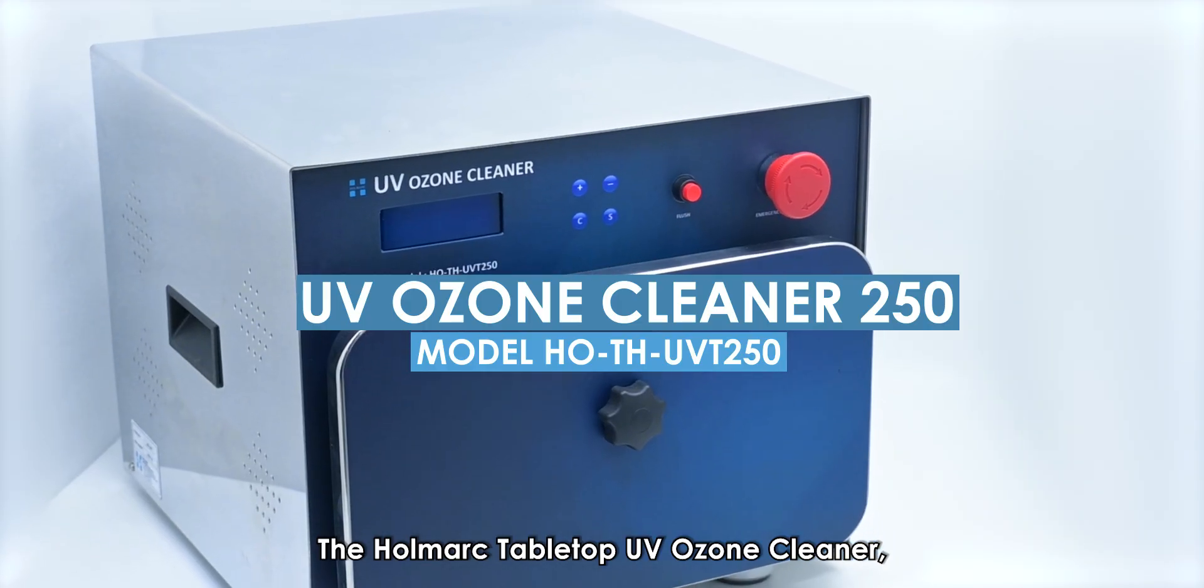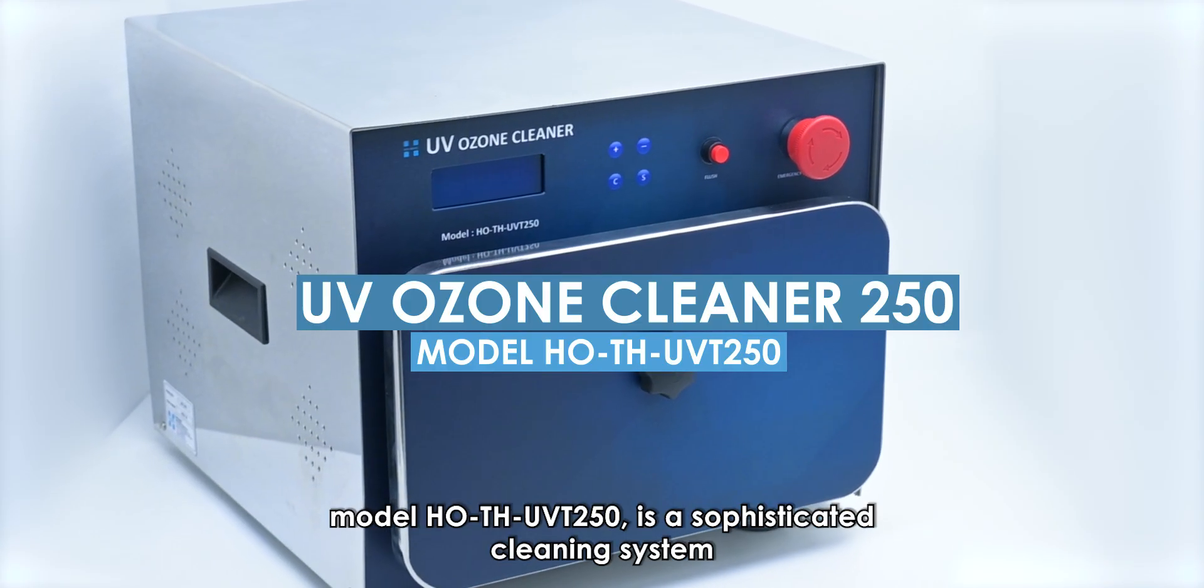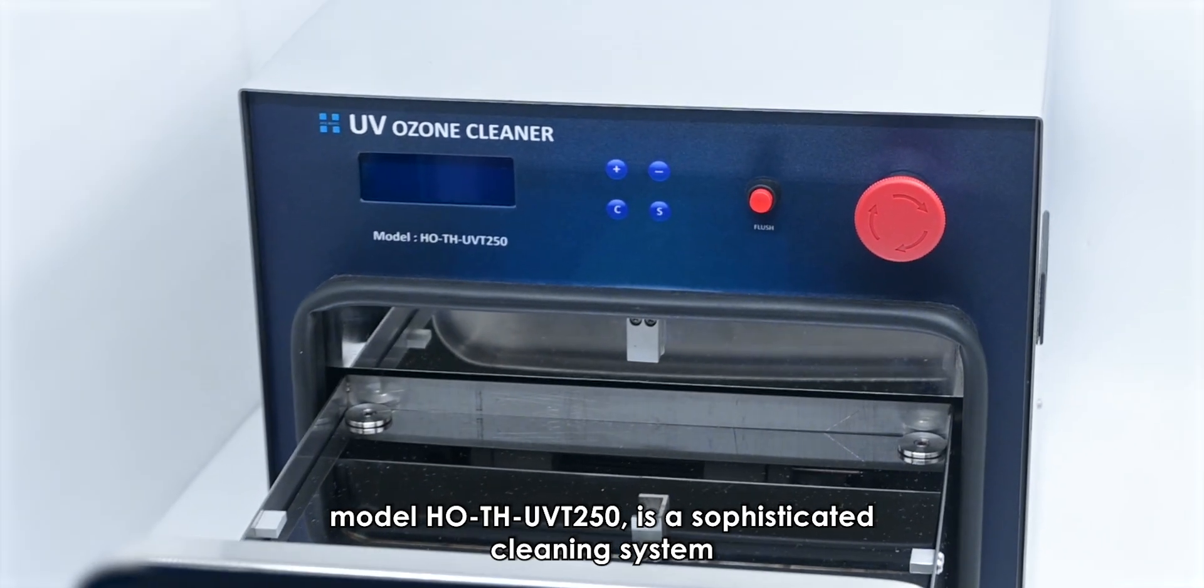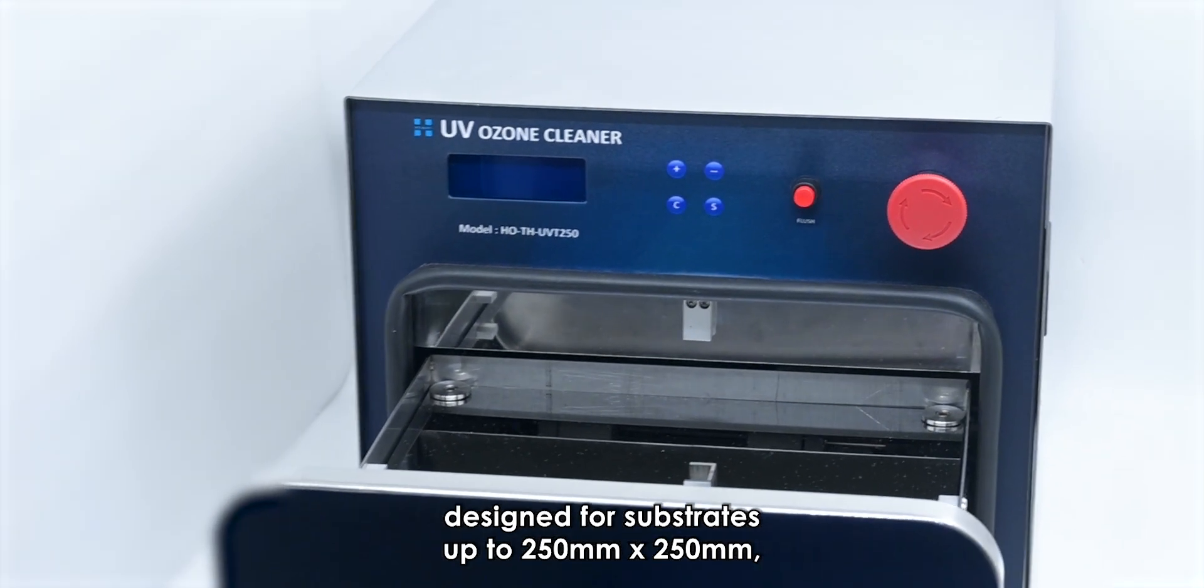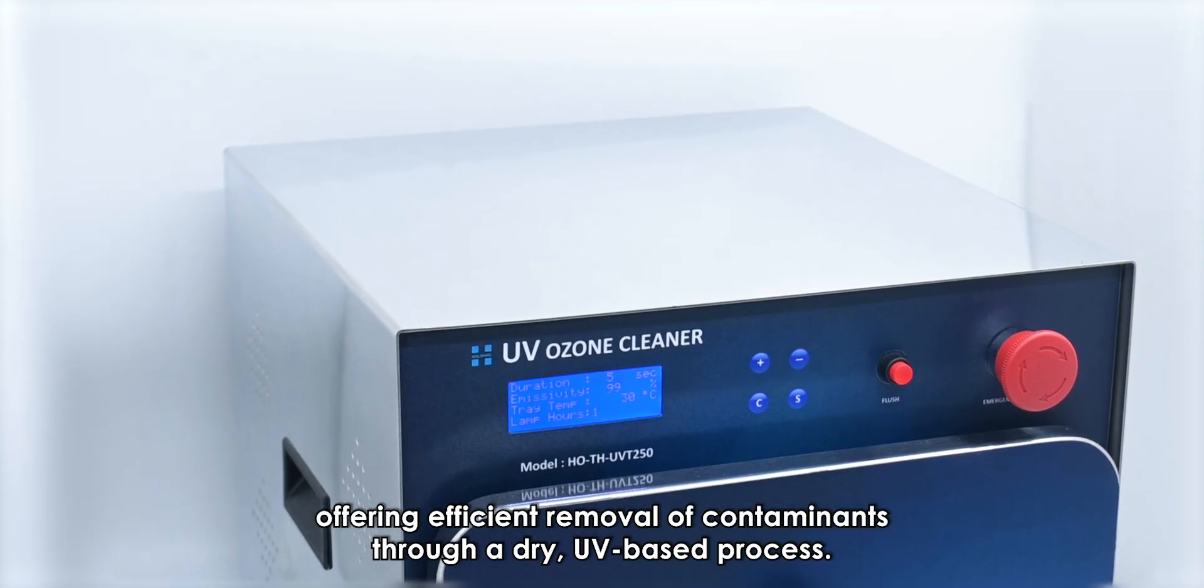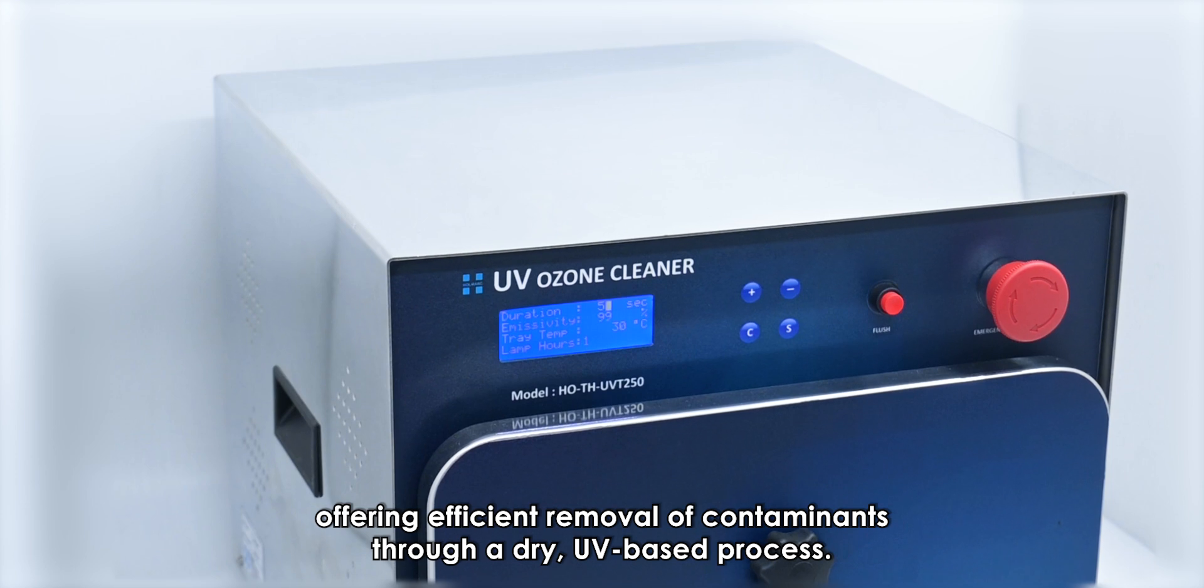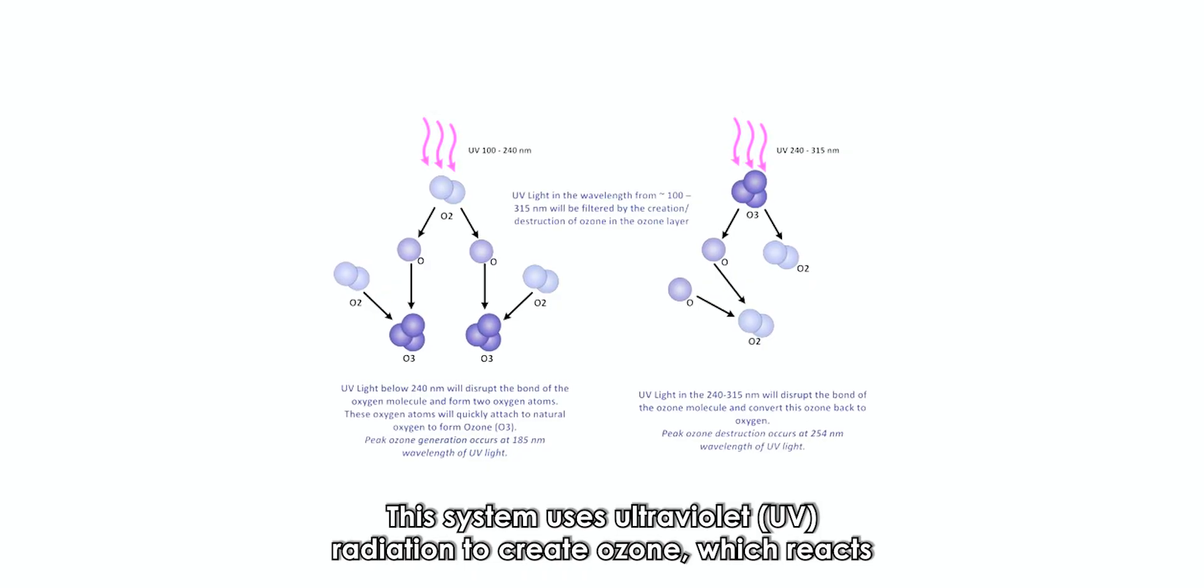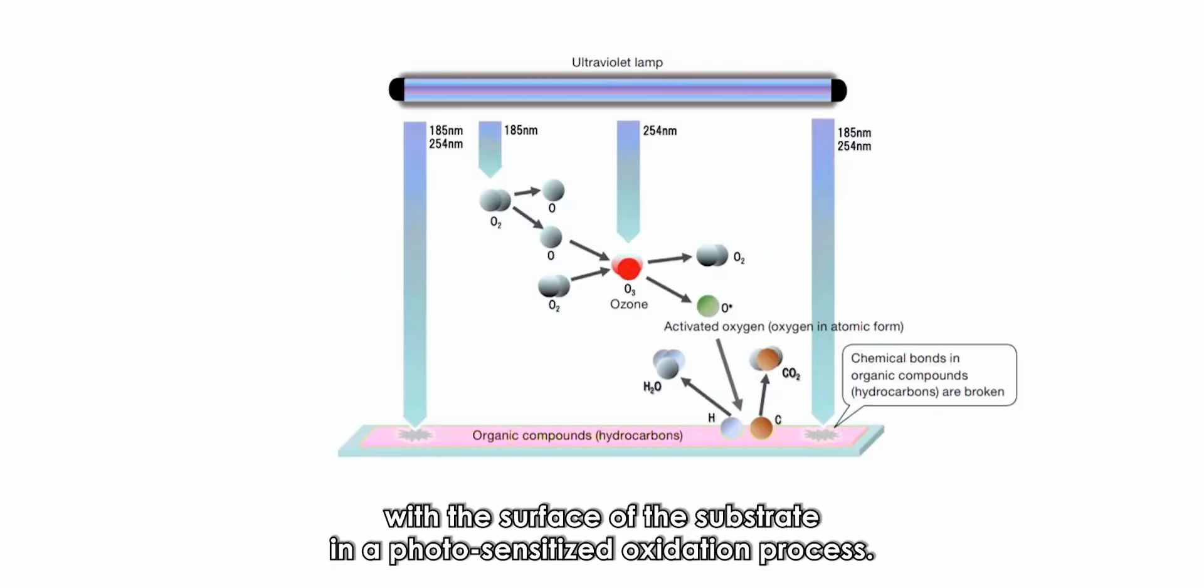The Homarc tabletop UV ozone cleaner model HO-TH-UVT250 is a sophisticated cleaning system designed for substrates up to 250 millimeters by 250 millimeters, offering efficient removal of contaminants through a dry UV-based process. This system uses ultraviolet radiation to create ozone, which reacts with the surface of the substrate in a photosensitized oxidation process.